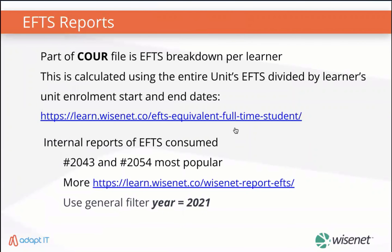Let's talk about EFS. The equivalent full-time student is a New Zealand government standard for assessing the time contribution of a unit enrollment. In Wisenit, EFS is collected at the unit level for a default value, then the unit offer for a default value for newly created unit enrollments, and then the unit enrollment, which is the lowest level from which EFS reporting is completed. The EFS monthly values are determined using the EFS value, the unit enrollment start date, the unit enrollment end date or withdrawal date if the outcome is withdrawn, and whether the SDR flag is true. You can run the 2043 and 2054 reports to get more information about your EFS summary.